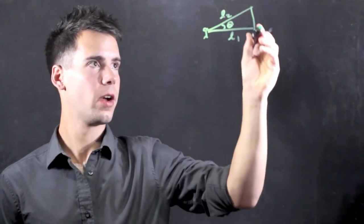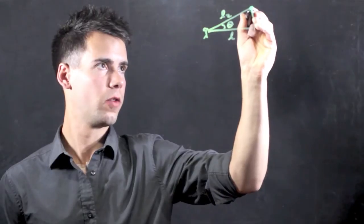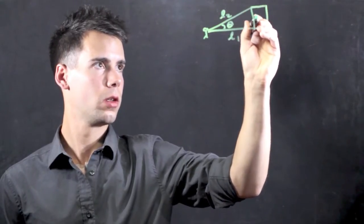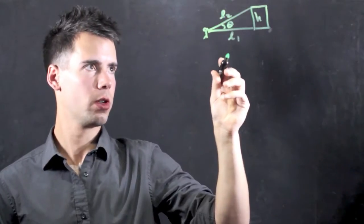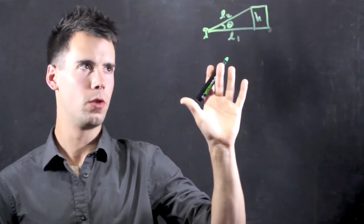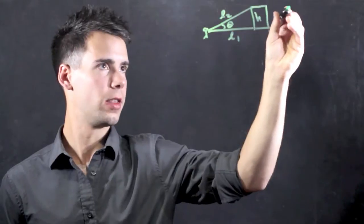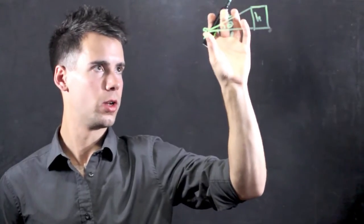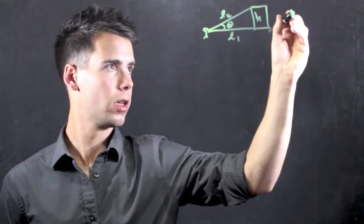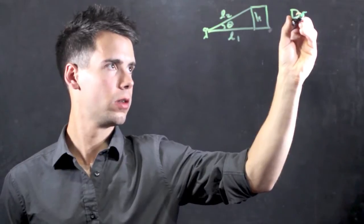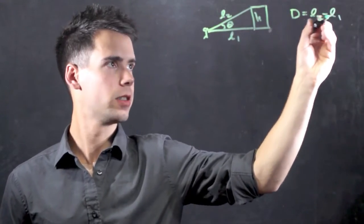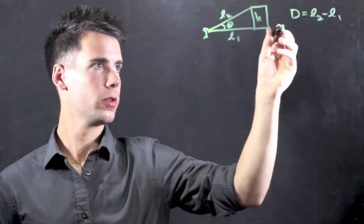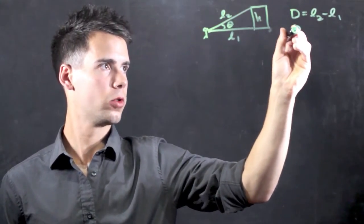Now you want to find the height, which is h of the building, which is over here. So you want to use trigonometry, but first you want to look at what you do know, which is that the difference between these two lengths you can say is equal to d, and it's equal to L2 minus L1. Also known is theta, which is given.